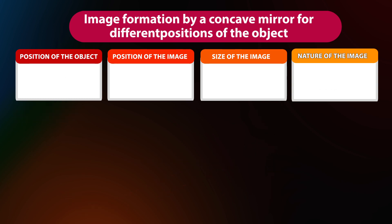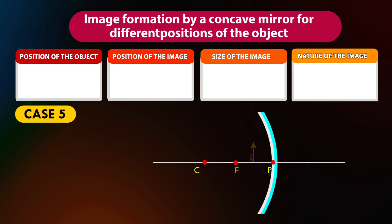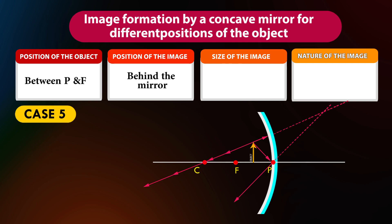Case 6: If the position of the object is between P and F, the position of the image will be behind the mirror. The size of the image will be enlarged, and the nature of the image is virtual and erect.